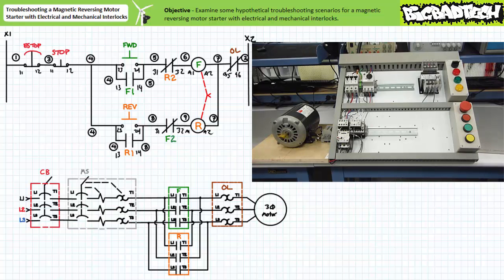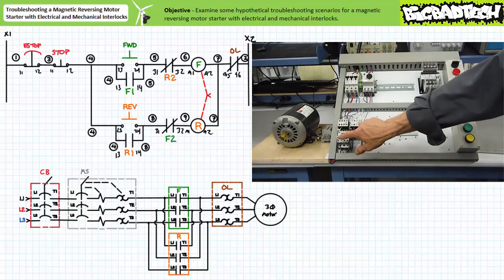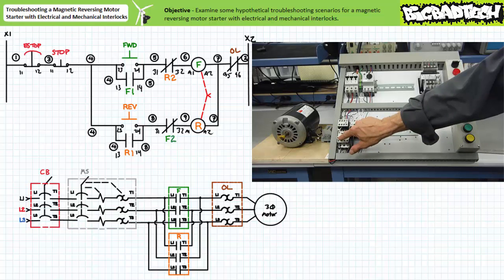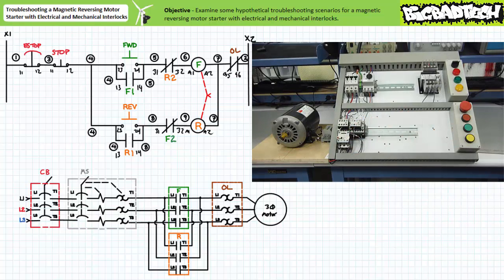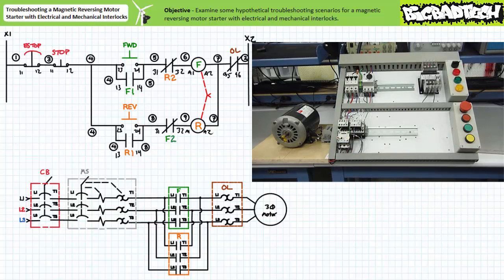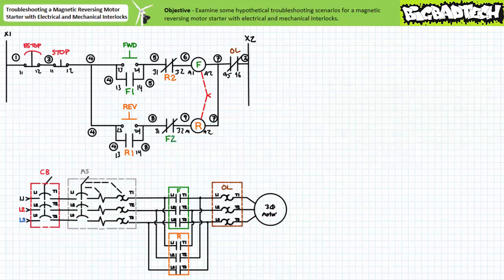In this case, I'm simulating an overload event by pushing the manual test button. The triggered overload element signals the forward contactor to open as expected. When the overload element in automatic mode cools and resets, i.e. when I stop triggering it, the system does not immediately return to the forward mode since the holding circuit is dropped out.